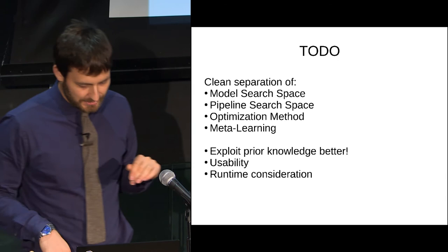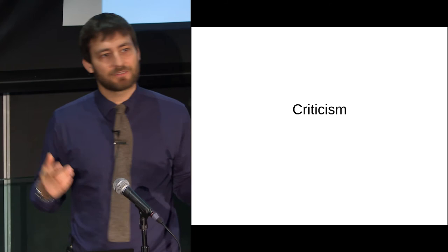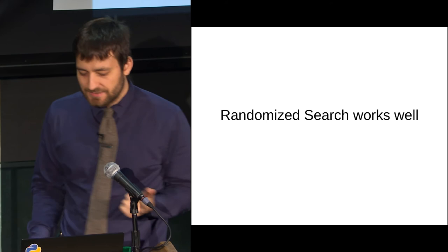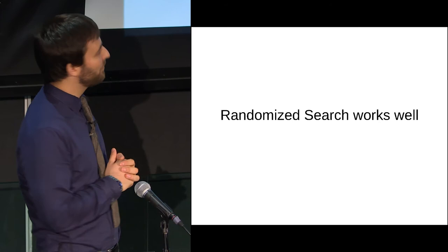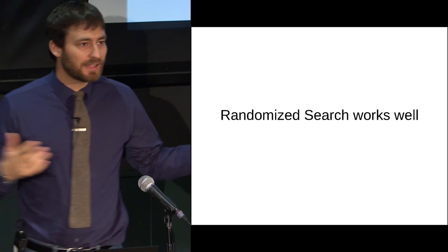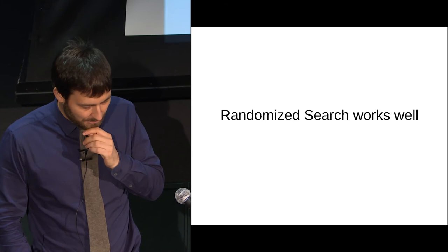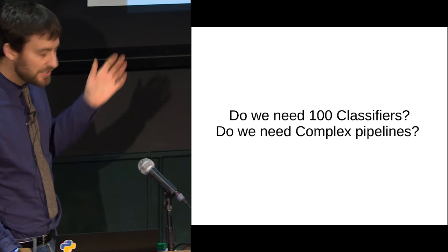There are some criticisms of AutoML. One is that random search works well and the problem is NP-hard, so maybe don't spend too much time on fancy search methods — or if 1.5x speedup matters, use one of them. But this doesn't mean AutoML is useless; it just means the search part may not be the most important part. Another criticism is: do we really need 100 classifiers? Auto-WEKA has over a hundred; auto-sk-learn maybe 20 or 30. On average, gradient boosting and decision trees always win, and running a random forest is also a good baseline. So how many models do we actually need, and do we really need complex genetic programming pipelines?